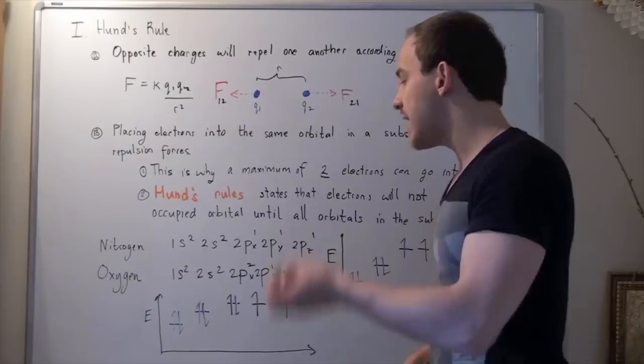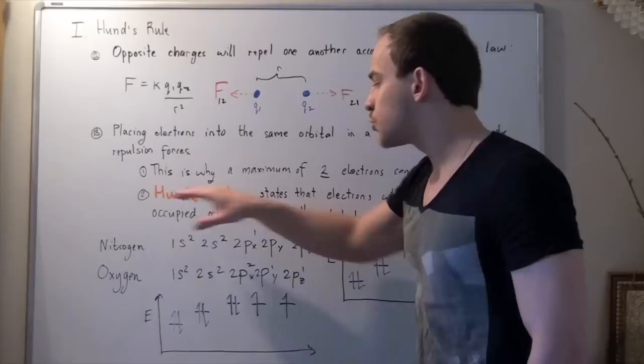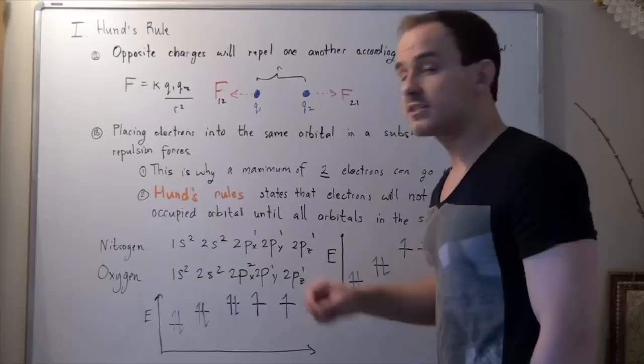Now, let's look at oxygen. Oxygen has eight protons. So, it has eight electrons. So, let's show the electron configuration according to Hund's rule. So, two electrons are placed into 1s, and two electrons are placed into the 2s.